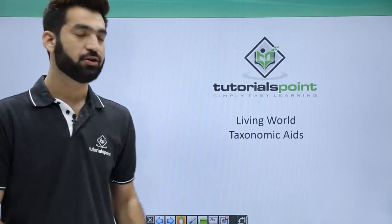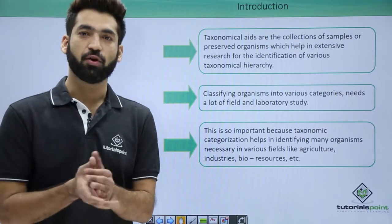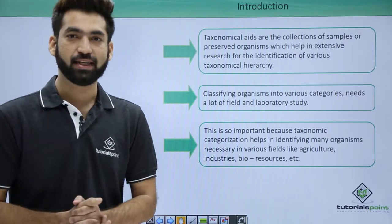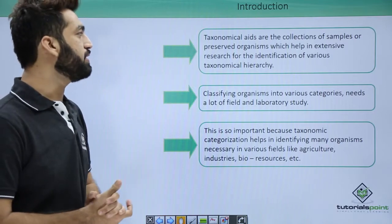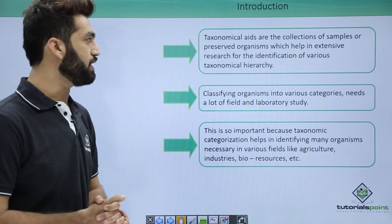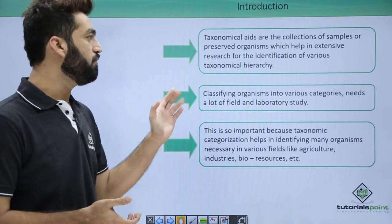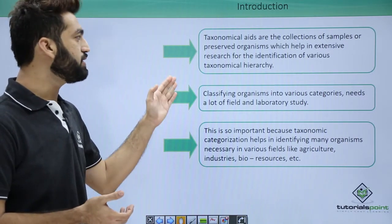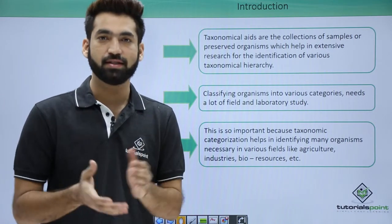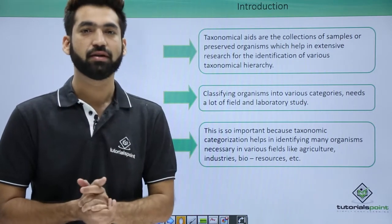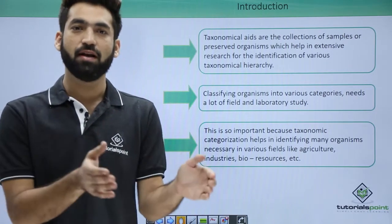This session will basically talk about taxonomic aids. The question is: what are taxonomic aids and why are they needed? Taxonomic aids are defined as the collection of samples or preserved organisms with the help of which you can do extensive research for the identification of various taxonomic hierarchies.